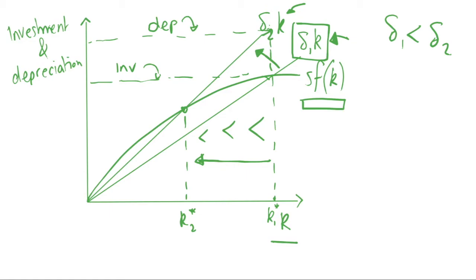So a change in depreciation changes the slope of the depreciation curve. If we increase depreciation, we get a steeper curve. If we decrease depreciation, we get a flatter curve. That can just be shown if we moved from sigma 2k back to sigma 1k, that will be decreasing the depreciation rate, and that increases the steady state.